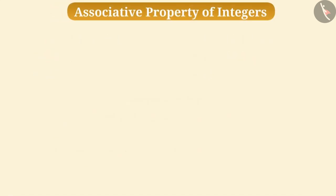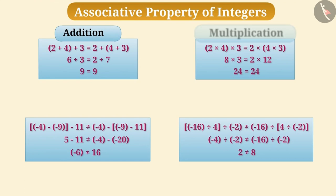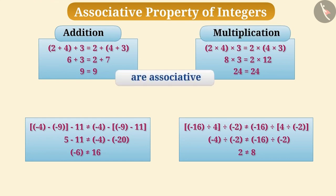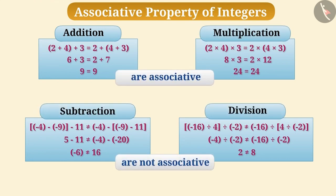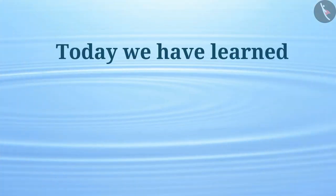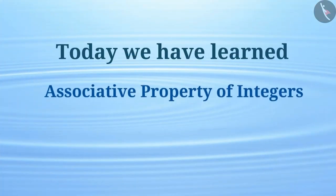Now you might have understood that integers are associative over addition and multiplication, but not over subtraction and division. Today we have learnt the associative property of integers. In the next video, we will understand it in a better way with some examples.